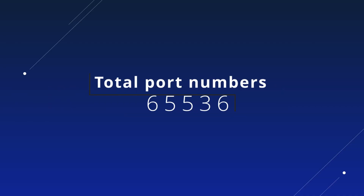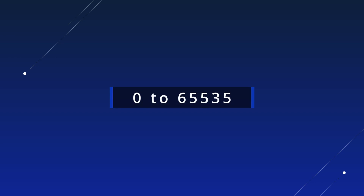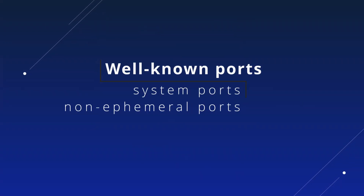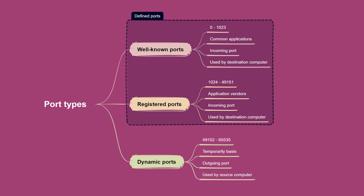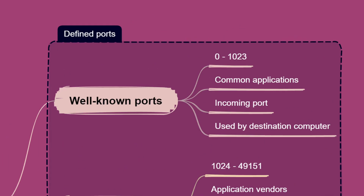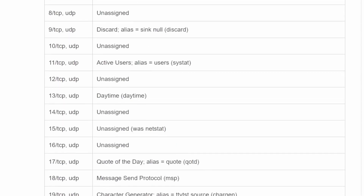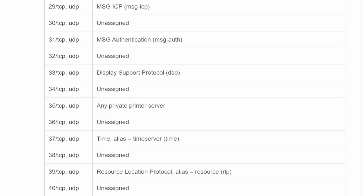There are a total of 65,536 port numbers going from 0 to 65,535. These ports are grouped into three types: well-known ports, registered ports, and dynamic ports. Well-known ports are also known as system or non-ephemeral ports, and they go from 0 to 1023. They are used by common applications like email and web servers. Here are a few examples of well-known ports you should probably memorize, but not every port between 0 and 1023 is in use or assigned.